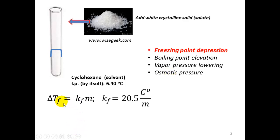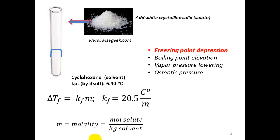In this experiment, the equation you'll be utilizing is the change in freezing point. The freezing point is going to be lower than 6.4 degrees. That difference equals the freezing point depression constant Kf. For cyclohexane the constant is 20.5 degrees C per lowercase m. Lowercase m is known as molality — moles of solute divided by kilograms of solvent.